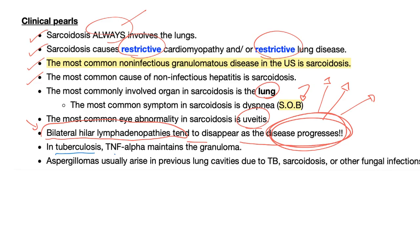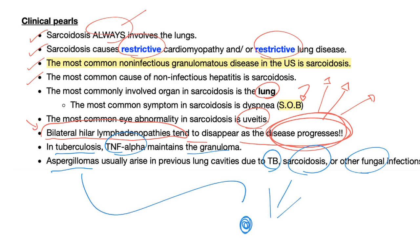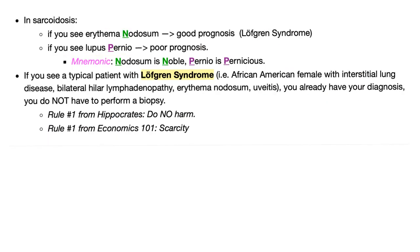In cases of TB, TNF-alpha maintains the granuloma. Aspergilloma usually arises in previous lung cavities due to TB, sarcoidosis, or other fungal disease — those diseases produce a cavity and aspergilloma comes on top of it. Skin involvement in sarcoidosis could be erythema nodosum or lupus pernio. Erythema nodosum carries a good prognosis — also known as Löfgren syndrome. If you see lupus pernio, this is poor prognosis. Mnemonic: nodosum is noble, pernio is pernicious.